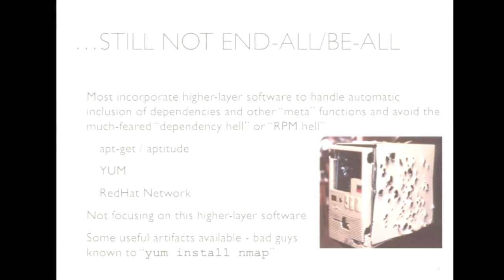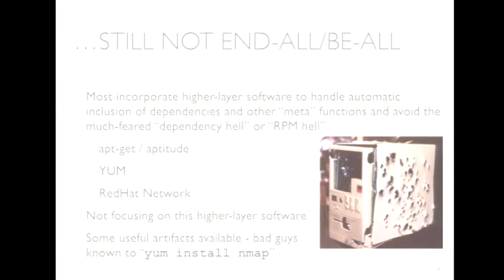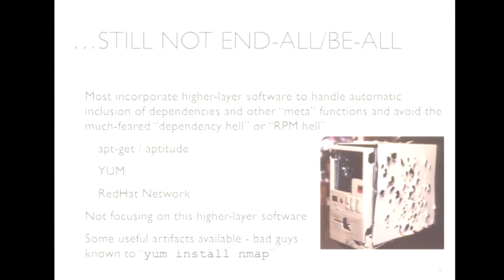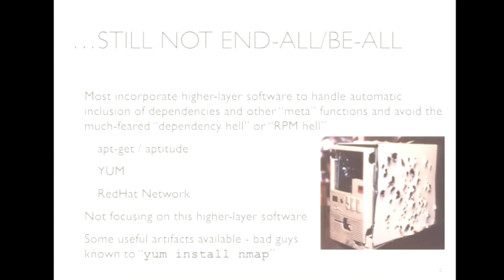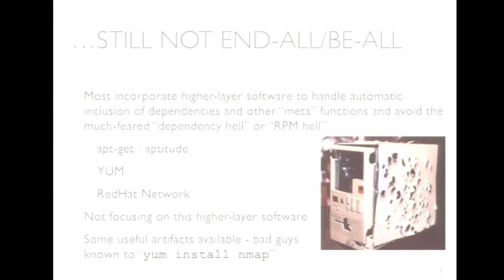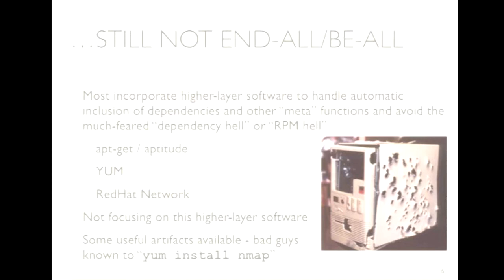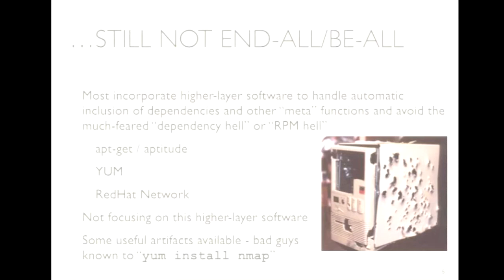The higher-level utilities do still leave a couple of interesting artifacts we'll talk about in a minute. One thing I saw in the same case that inspired this talk: the very first thing the bad guys did when they got on the box was 'yum install nmap'. I was like, no way — even Hollywood wouldn't do that. But sure enough, every piece of evidence showed that was the very first thing they did. In this case they wanted to find database servers, so they ran nmap scanning for port 3306 to find MySQL servers.